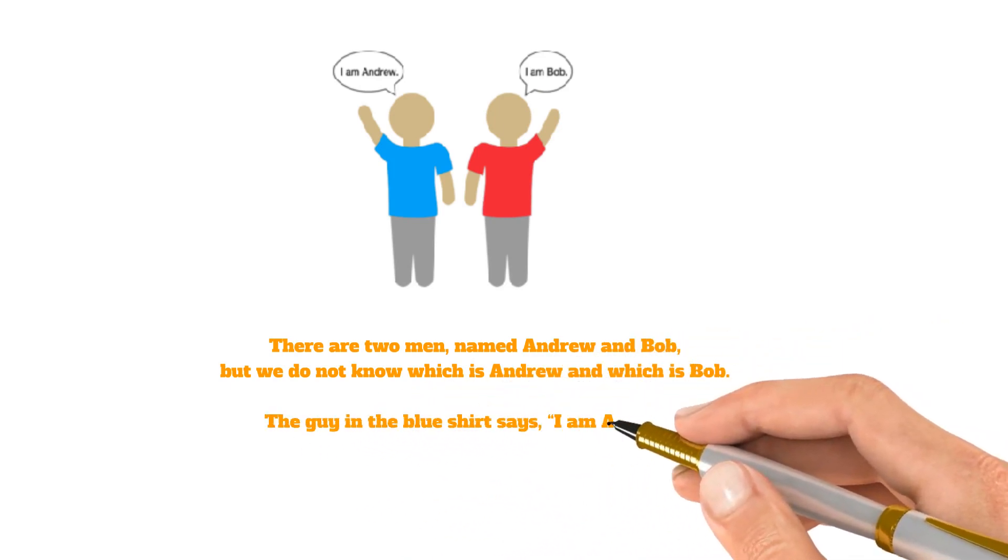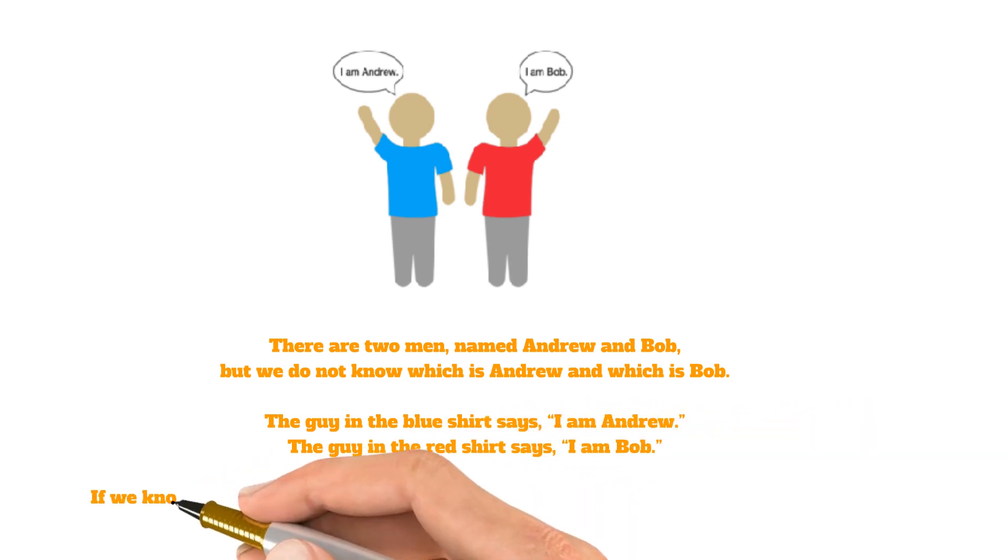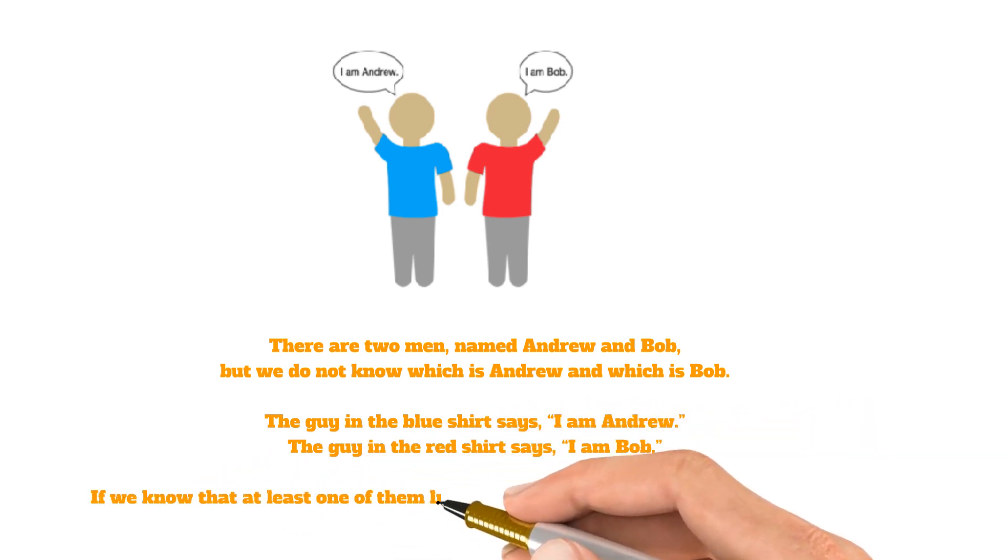The guy in the blue shirt says I am Andrew and the guy in the red shirt says I am Bob. If we know that at least one of them lied, then what color shirt is Andrew wearing?